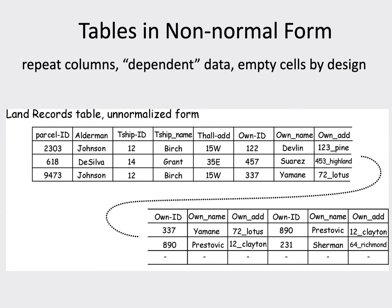We have an example here where we have tables in non-normal forms — a common spreadsheet-like organization. There are parcels with aldermen and townships, and then owner information. We have repeat columns: multiple owners for some parcels, so we can have an owner ID, owner name, and owner address repeated. A person can own multiple parcels, so someone like Prestovich appears for two parcels. And you can have a lot of empty space because some parcels have one owner while others have many. We want to turn this unnormalized spreadsheet-like structure into a relational data structure.